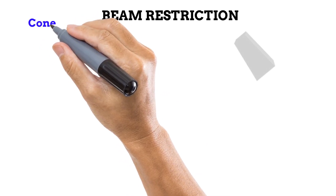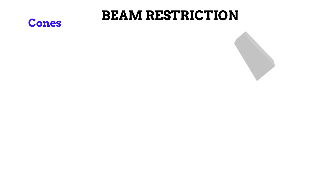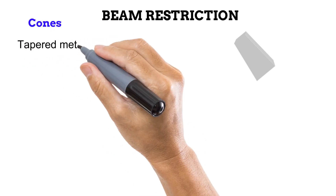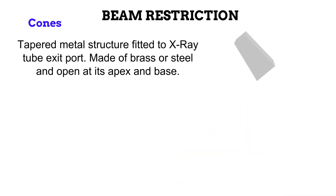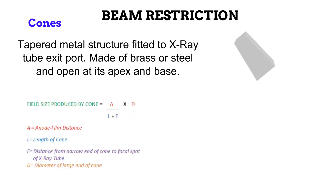Next is the cone. This is also fitted to the exit port of the X-ray tube like the aperture diaphragm. It however differs in that it is not a flat metal sheet — it is a cone-shaped tapered structure that increases from its apex to its base. It is made of brass or steel, and is open at its apex and base. It is through these openings that the X-ray beam is shaped into a much narrower form. The width of the field produced by a cone can be estimated using the formula: Field size equals A divided by (L plus F), all multiplied by D — where A is the distance between the anode and the image receptor, L is the length of the cone, F is the distance between the narrow end of the cone and the focal spot of the tube, and D is the diameter of the wide end of the cone.